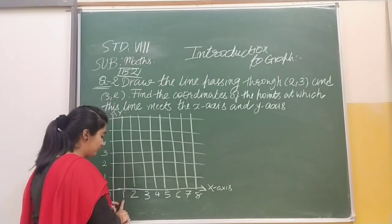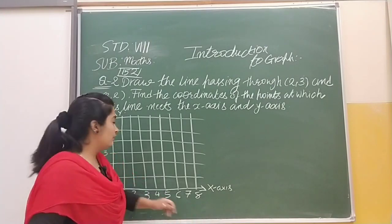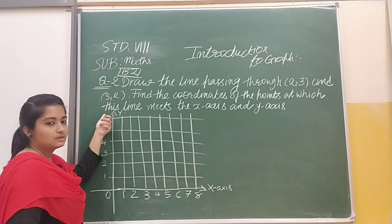Then at each centimeter mark you will label 1, 2, 3 continuing up to 8, and here you will label 1, 2, up to 6.